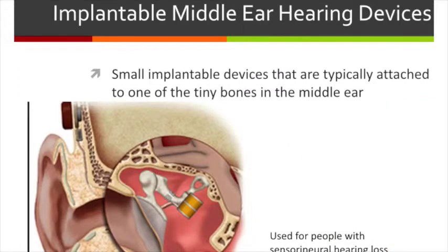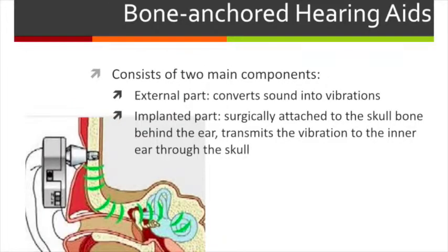An implantable middle ear hearing device is a small device typically attached to one of the tiny bones in the middle ear. It is used for people with damage in the middle ear, which is a form of sensorineural hearing loss. A bone-anchored hearing aid is for people with severe middle ear or outer ear damage. It consists of two main components: an external part which converts sound into vibration, and an implanted part surgically attached to the skull bone behind the ear, which transmits vibration to the inner ear through the skull.